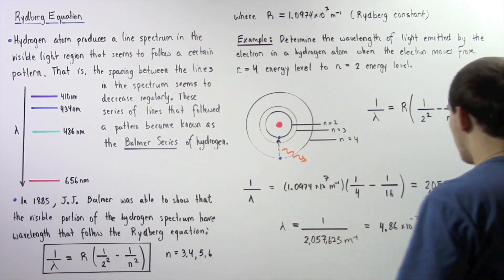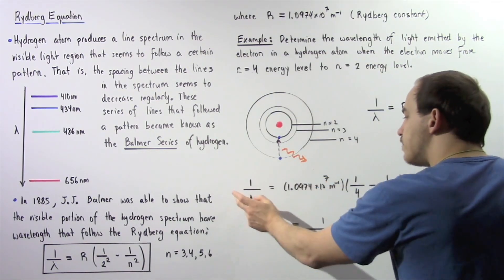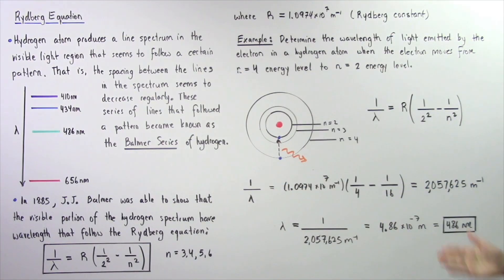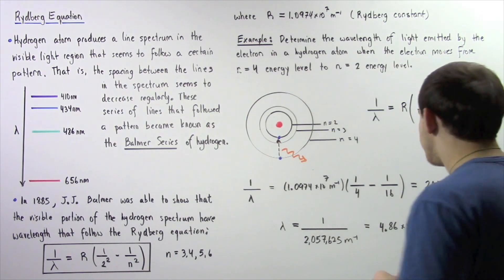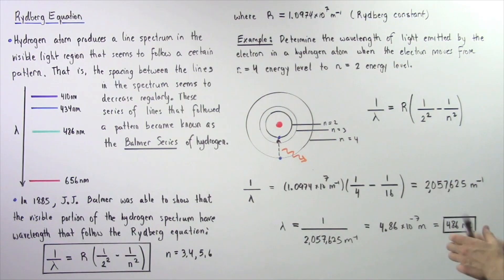So we subtract and multiply and we see that 1 divided by lambda is equal to 2,057,625 meters to the negative 1. Now to find the wavelength, we simply take the reciprocal of this and we get the following results.